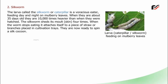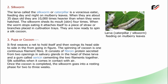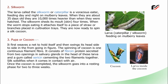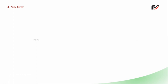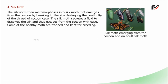Stage three — pupa or cocoon: the silkworm first weaves a net to hold itself and then swings its head side to side in a figure-eight motion. The spinning of the cocoon is one continuous filament fibre. It consists of fibroin protein secreted from two openings in the salivary glands in the head of the larvae, and a gum called sericin cementing the two filaments together. Silk solidifies when it comes in contact with air. Once the cocoon is completed, the silkworm goes into a resting phase for two to three weeks. Stage four — silk moth: the silkworm then metamorphoses into a silk moth that emerges from the cocoon by breaking it, thereby destroying the continuity of the thread. The silk moth secretes a fluid to dissolve the silk and thus escapes from the cocoon with ease.